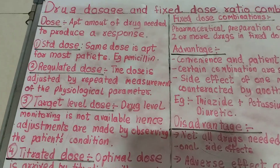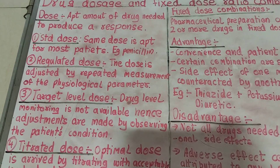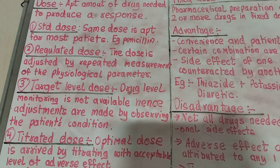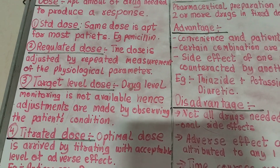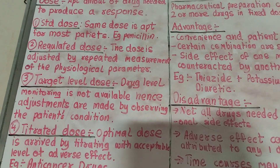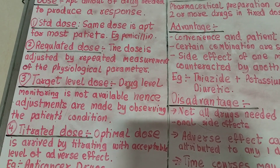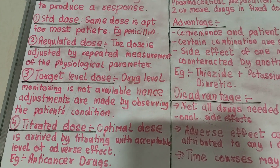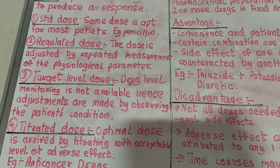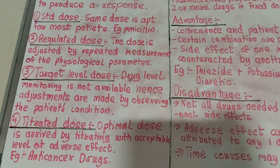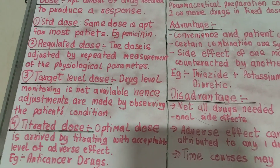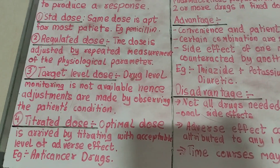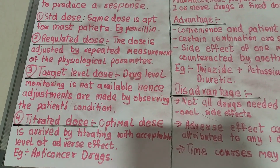So what is a standard dose? The same dose is apt for most patients — an example is penicillin. The amount of dose given is more or less the same to every patient, so it is universally or regionally the same. The next type is the regulated dose, where the dose is adjusted by repeated measurements of physiological parameters and adjusted accordingly.